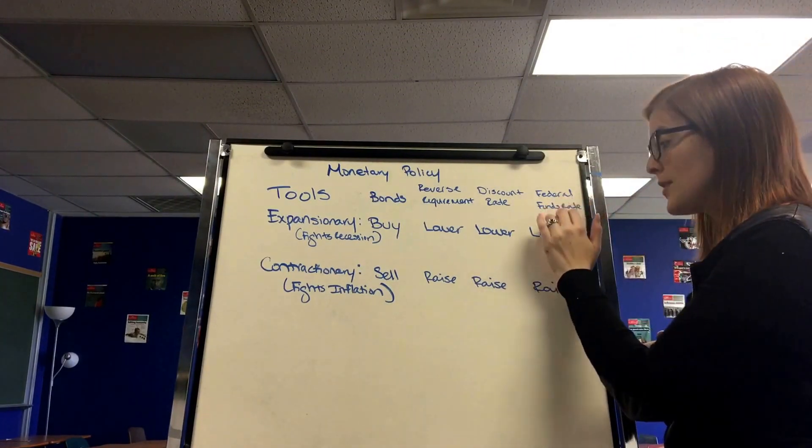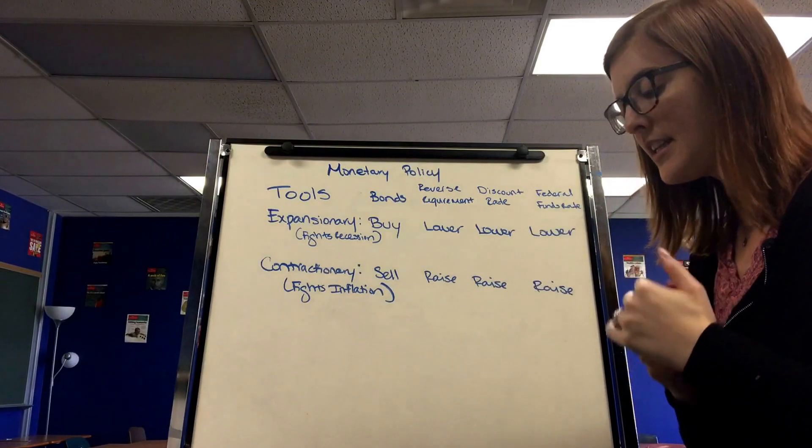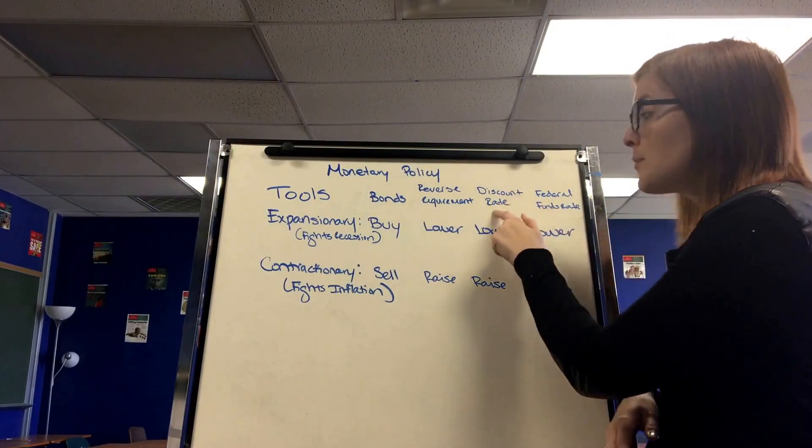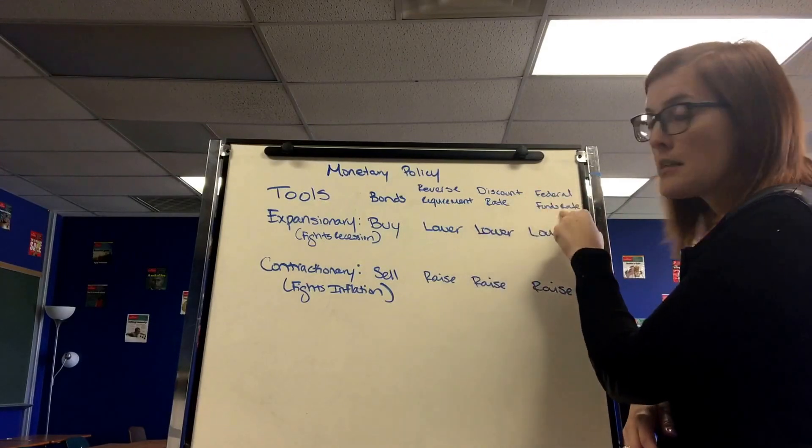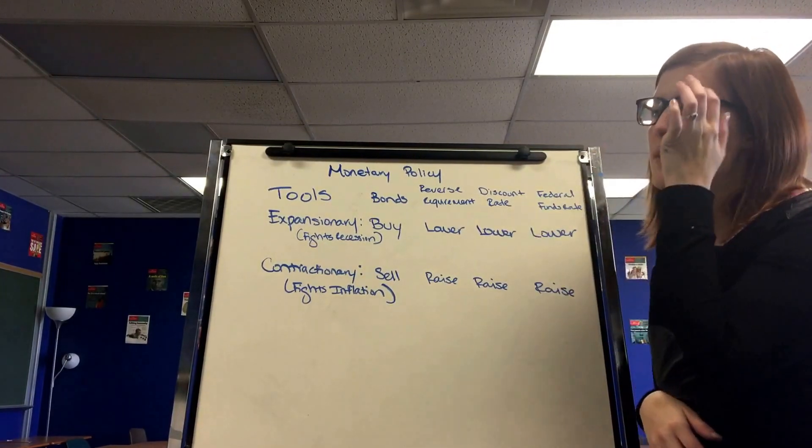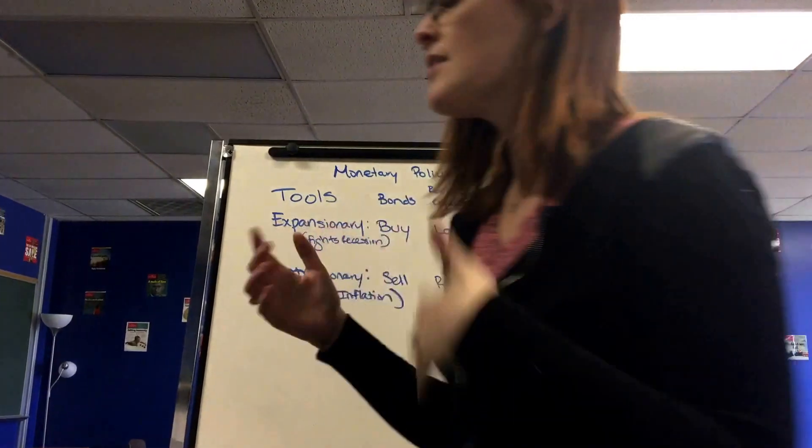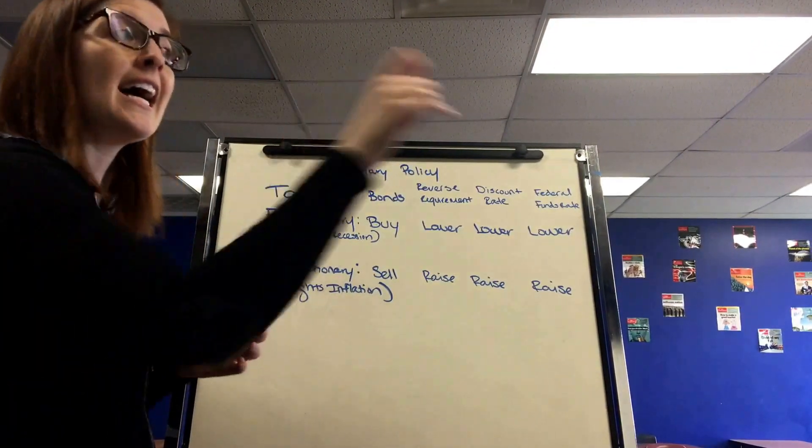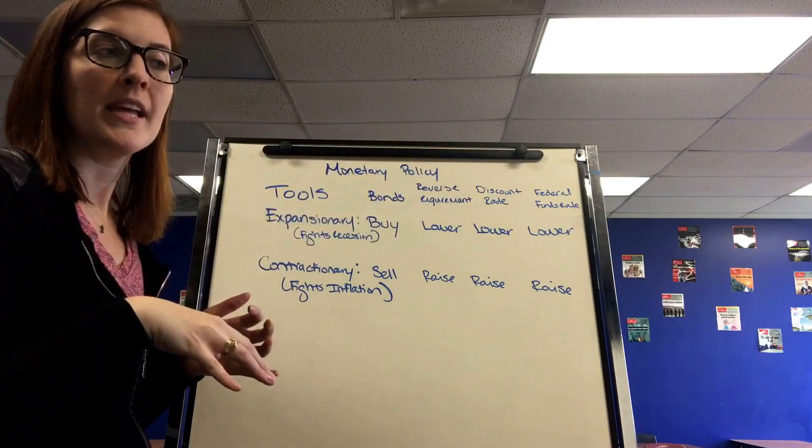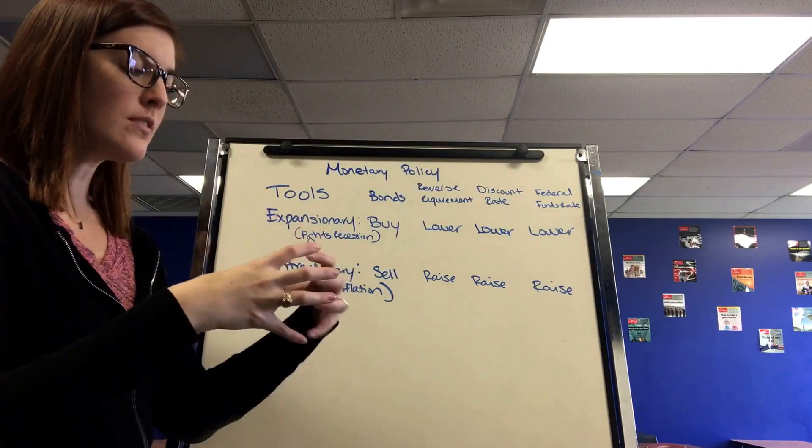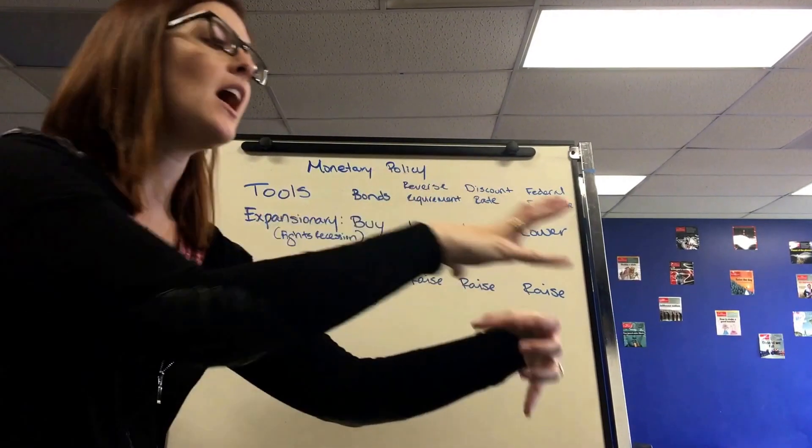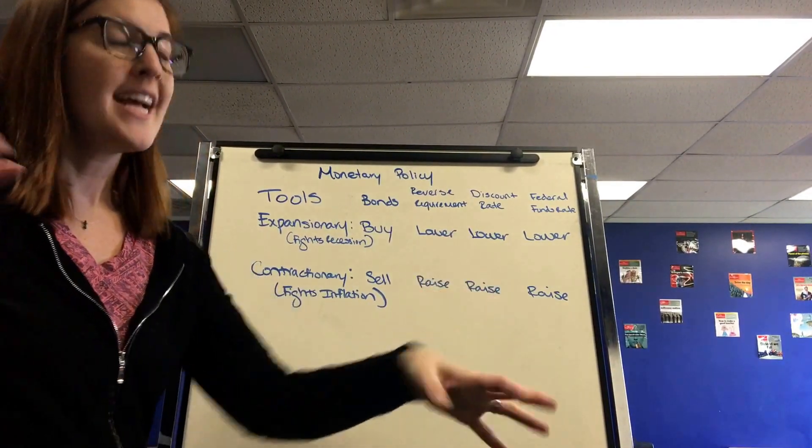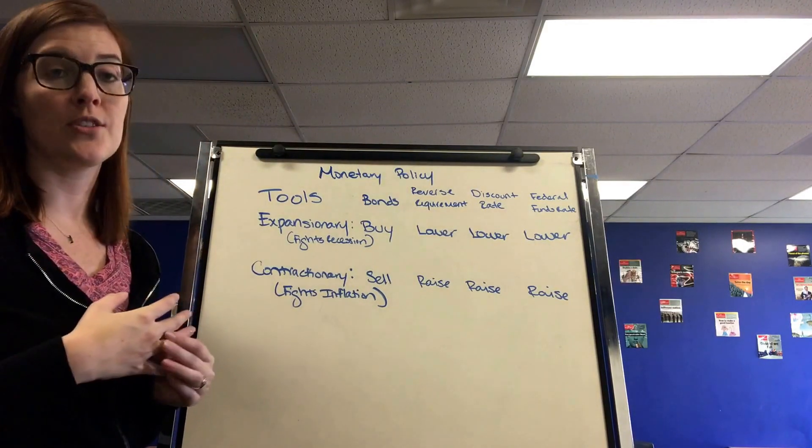And the final one is the Federal Funds Rate. The Federal Funds Rate is the interest rate on loans between commercial banks. So I always remember Fed to Bank, discount rate. Bank to Bank, Federal Funds Rate. Now this is a little bit tricky though when it gets into the grit of it. The Federal Funds Rate looks at the excess reserves being held at the different district banks. And when banks hold their excess reserves there, other commercial banks can come and take out loans from those excess reserves. And the interest rate on those loans is called the Federal Funds Rate.